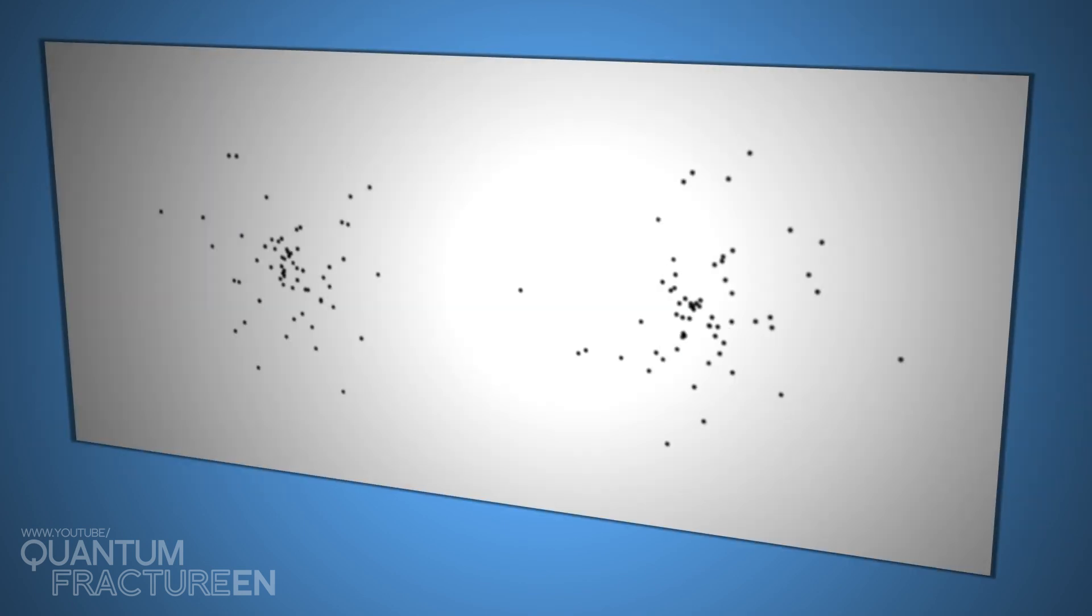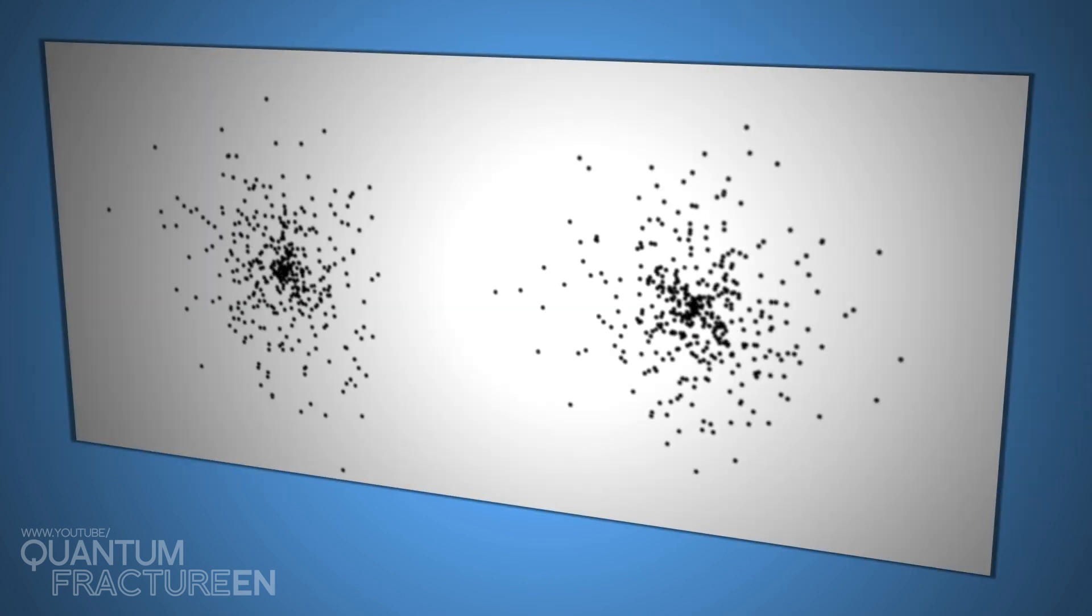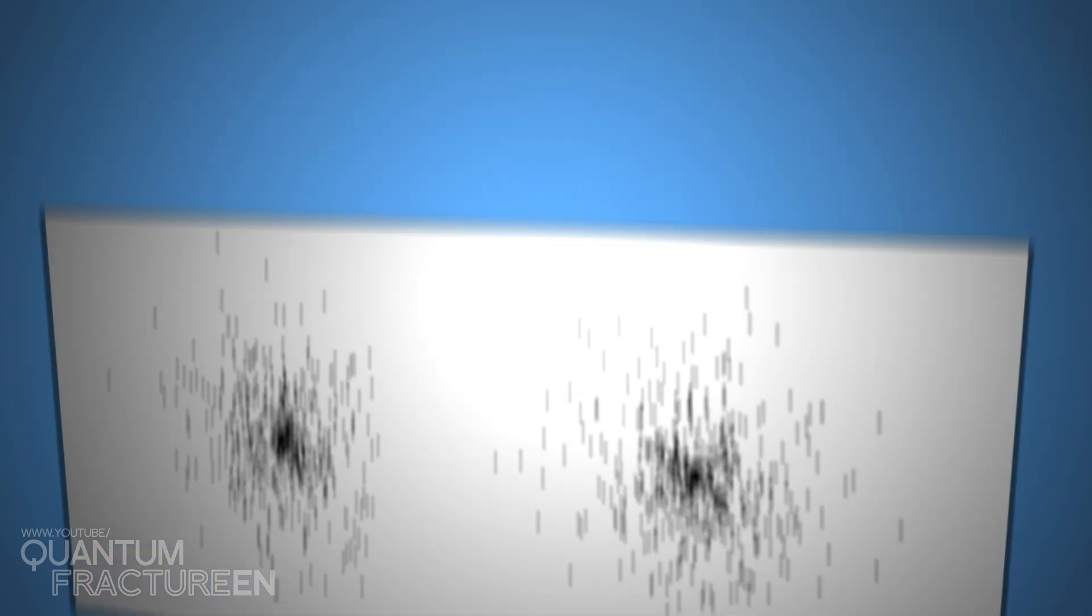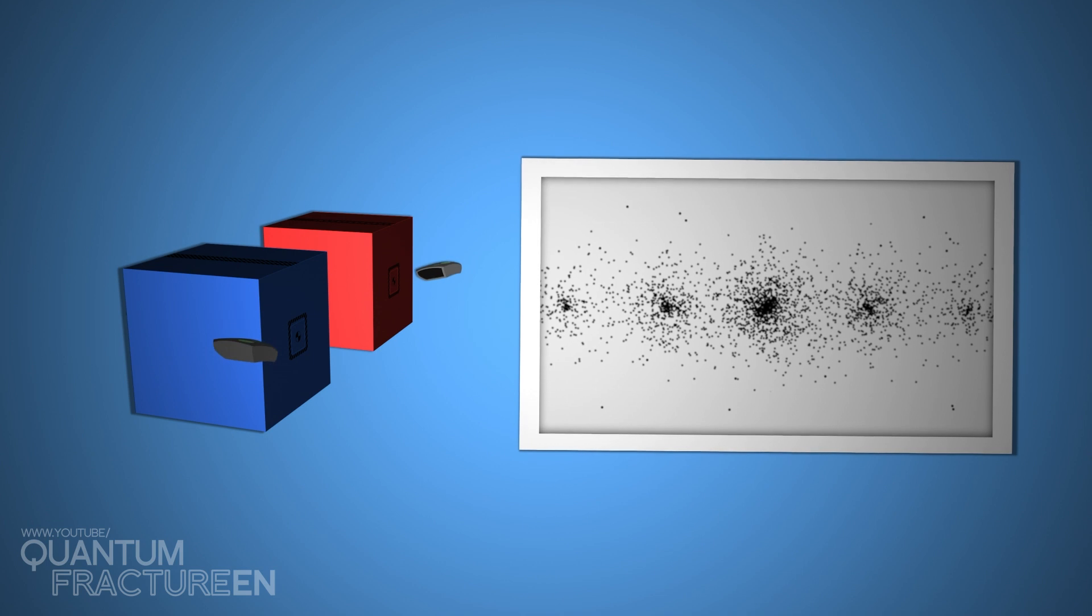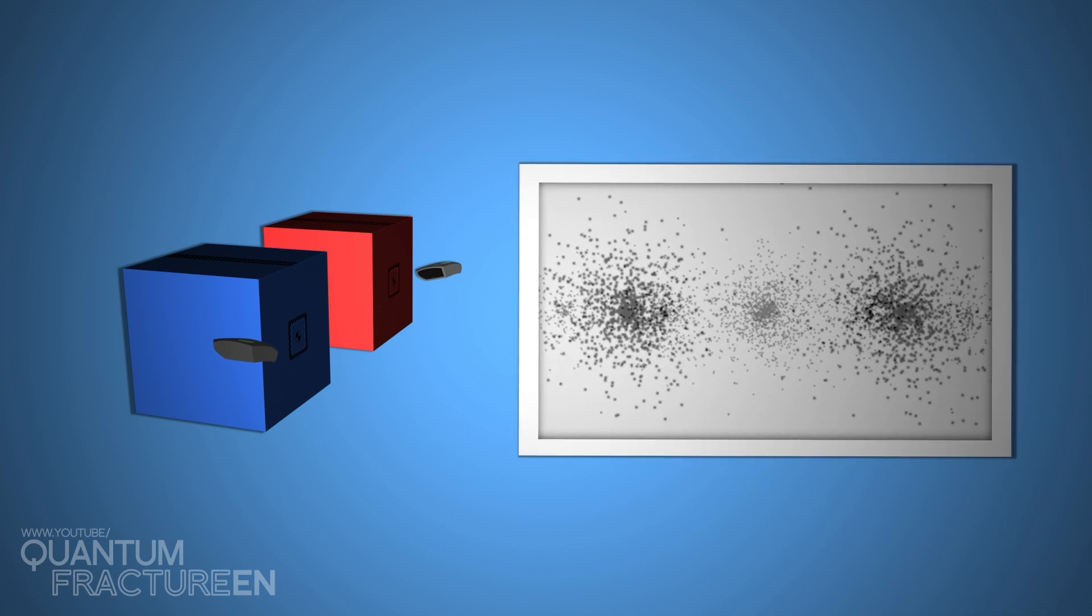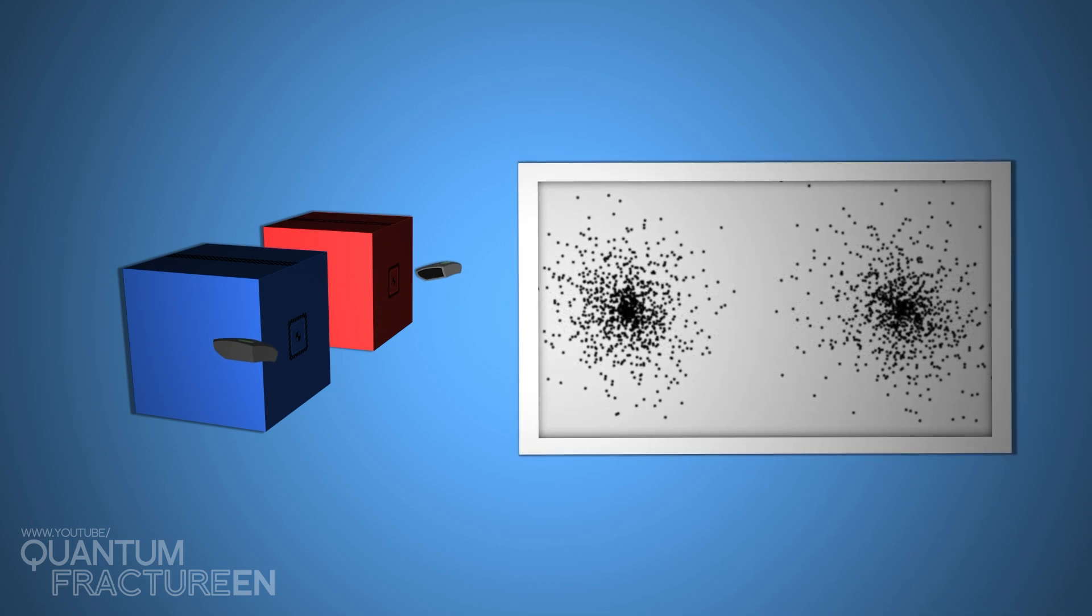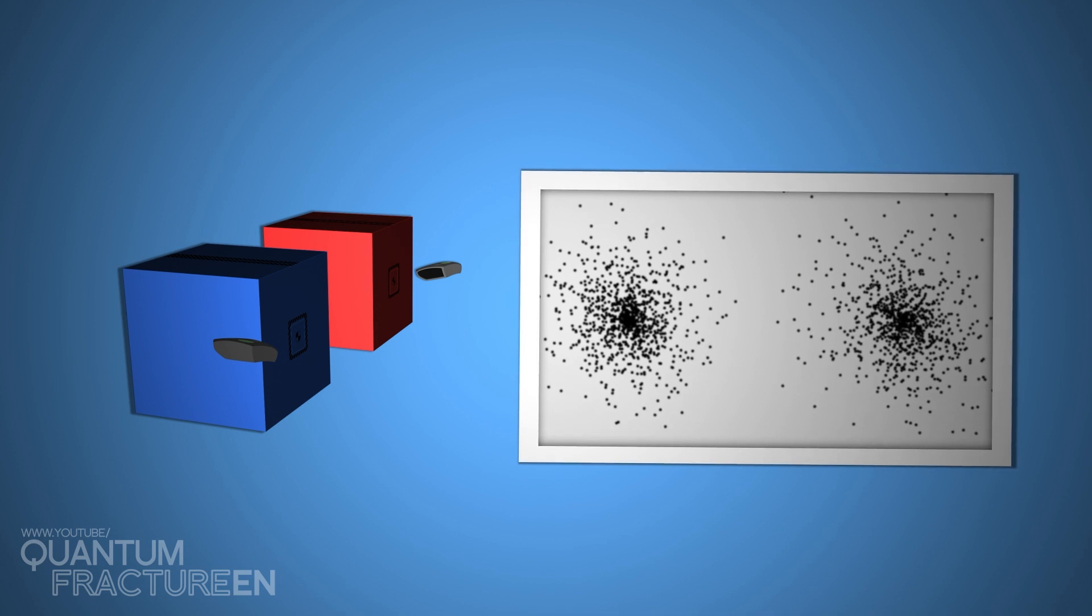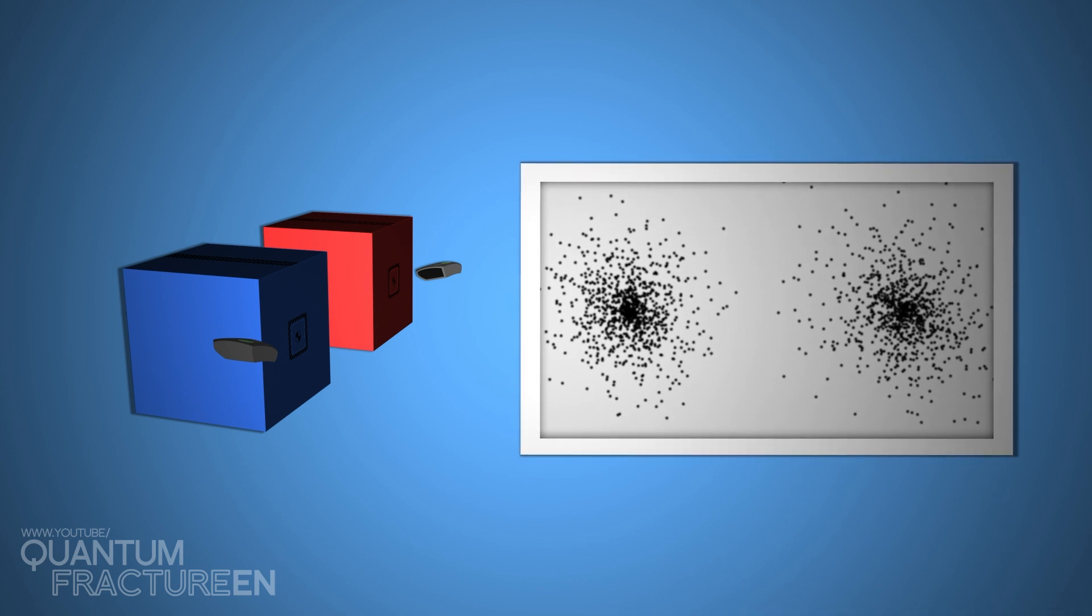I'll say it again. When we use detectors, the only proof we have that the atom is in both boxes vanishes, and instead we see a pattern which tells us it's in one box. Do you see what's happening here?